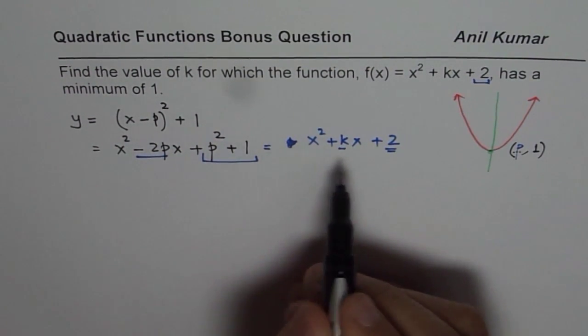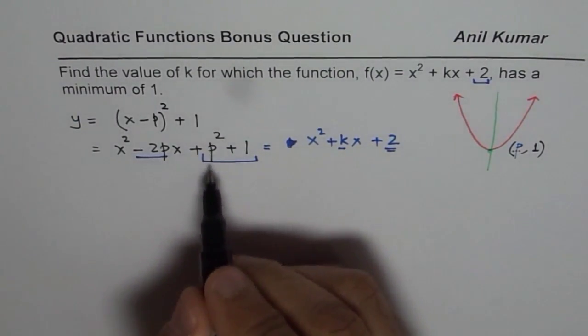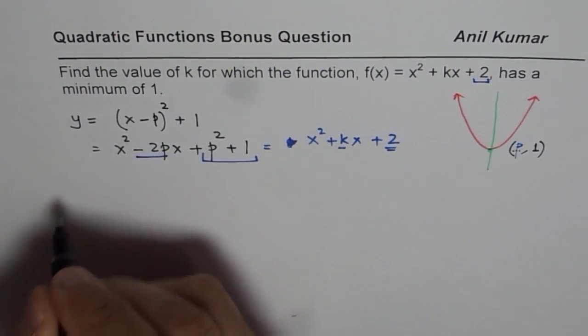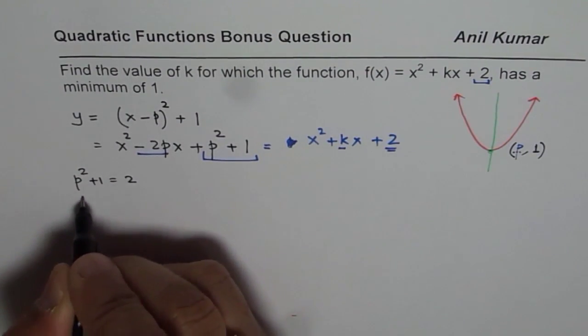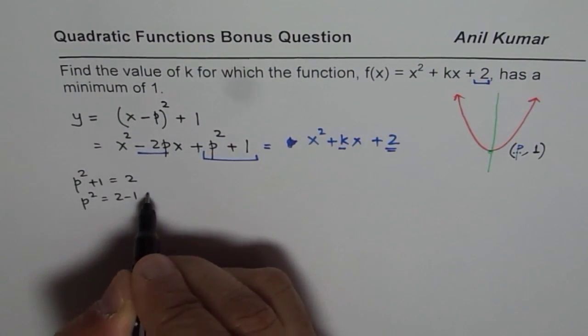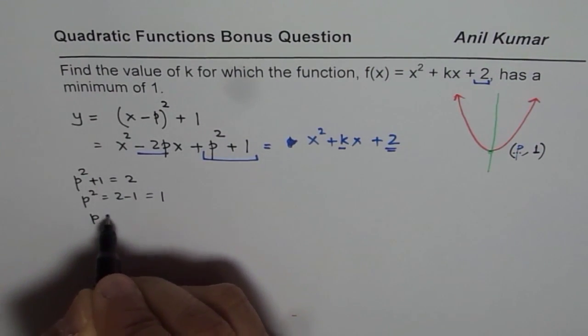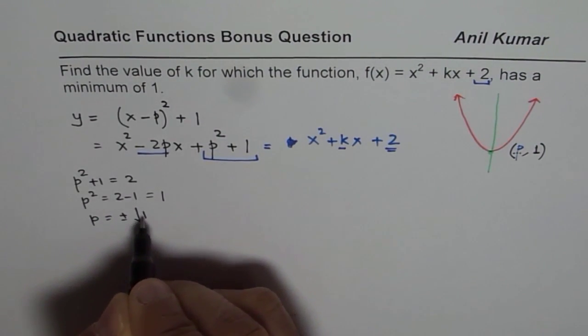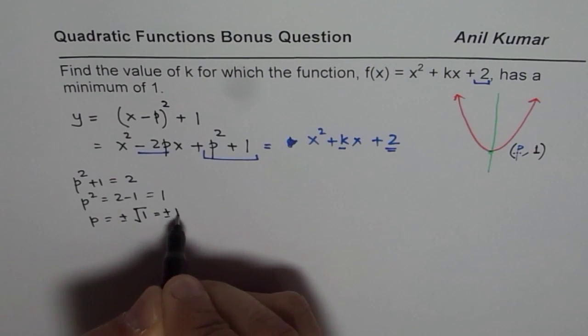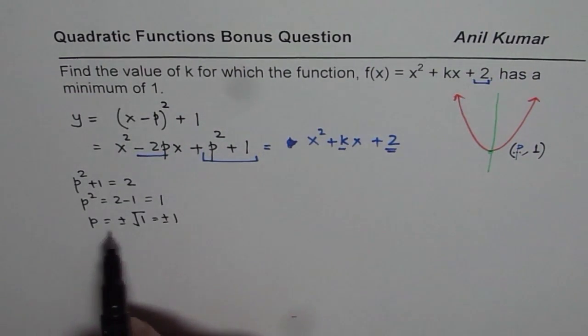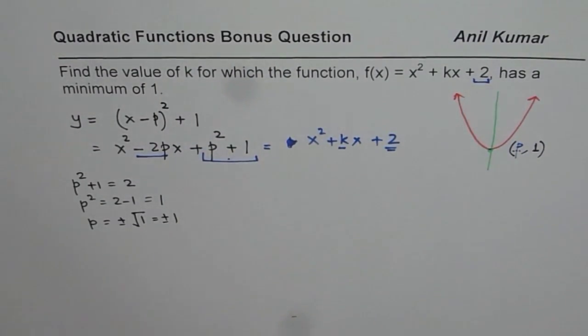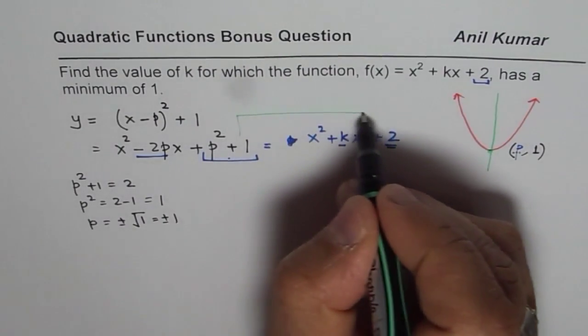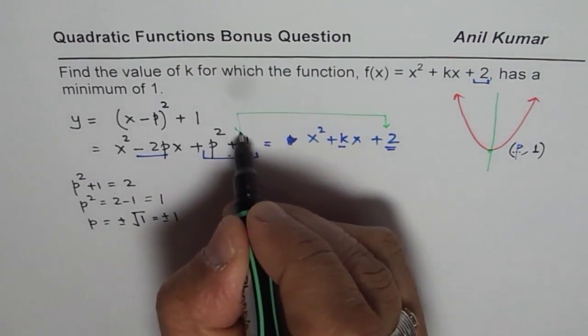So from this, we can find the value of p. So p squared plus 1 is 2. Let us solve for that. p squared plus 1 equals 2, p squared equals 2 minus 1, which is 1, and p will be plus or minus square root of 1, which is plus or minus 1. So we get value of p as plus or minus 1. So that is by comparing these two and got the value of p.